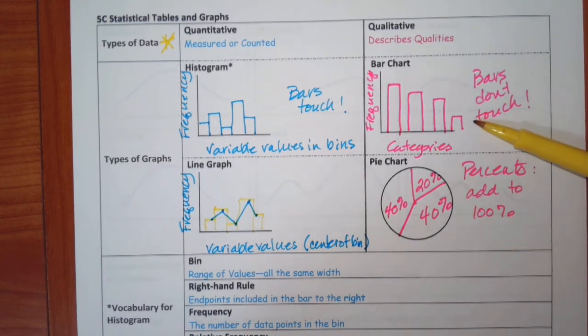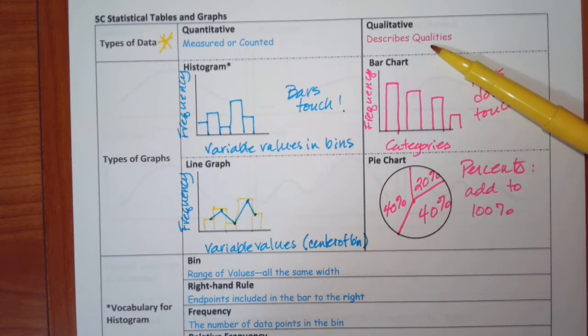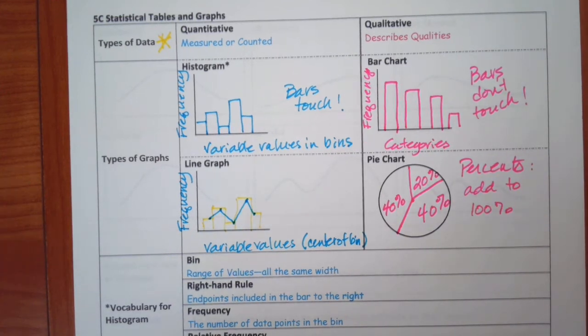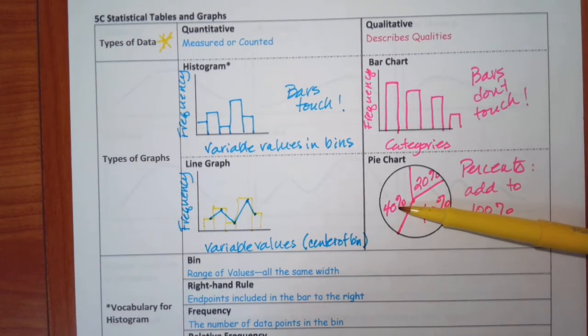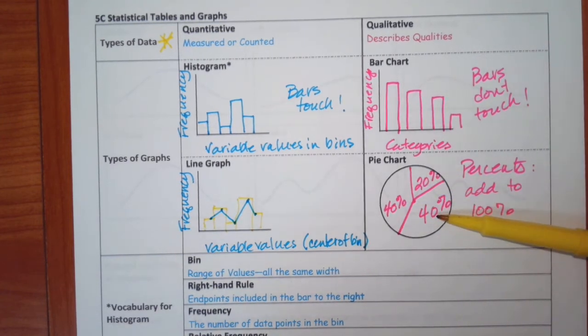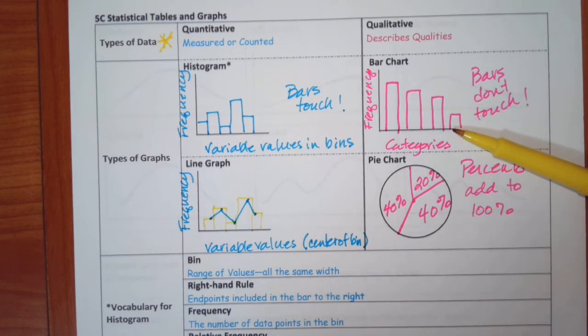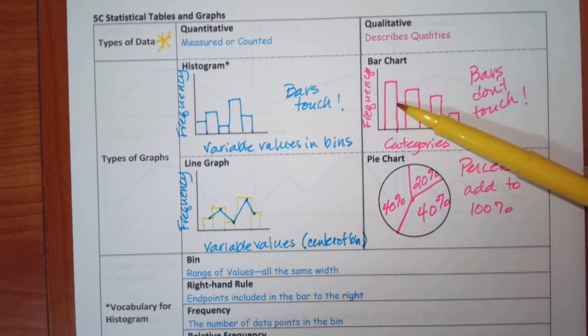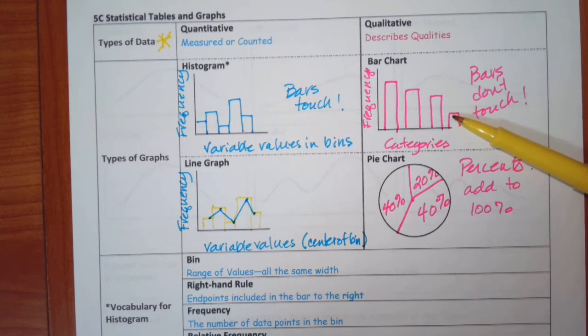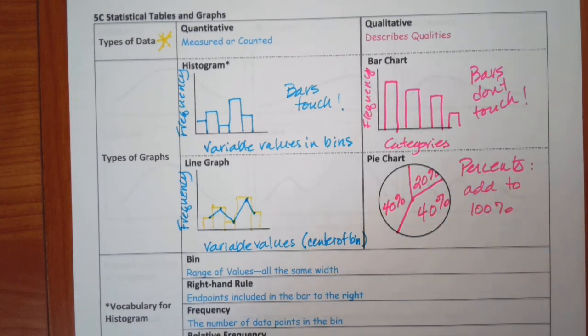A pie chart is when you're still dealing with categories, but you're dealing with percents. You don't know how many people were polled. You don't have a number, but you know that 40% of them said this, 20% of them said this, and 40% said this. Here, you would be able to say, well, 19 people said this, 17, 16, 8. But you don't know the numbers here. But you know that the total of the pie adds to 100%.